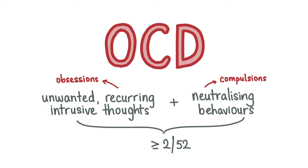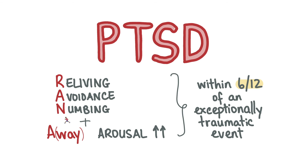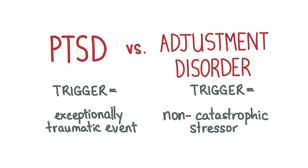Post-traumatic stress disorder is caused by exposure to an event or situation of exceptionally threatening or catastrophic nature. It is characterized by persistent remembering or reliving of the situation, avoidance of similar situations, emotional numbing, increased arousal and possibly the inability to recall the event. These symptoms start within six months of the event. PTSD is different to adjustment disorder, which is caused by an identifiable, non-catastrophic psychosocial stressor such as breakdown of a relationship or loss of a relative. PTSD is commonly associated with comorbidities like depression, other anxiety disorders and substance misuse, especially alcoholism. The trauma screening questionnaire and post-traumatic diagnostic scale can be used to help diagnose PTSD.